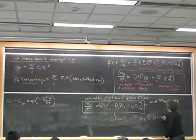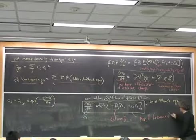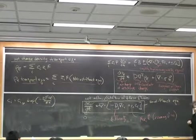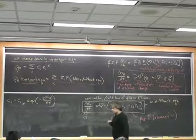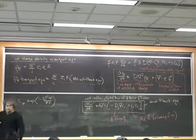And this is assuming that the velocity of the fluid is equal to 0. And that's correct for our static equilibrium description of the electrical double layer.